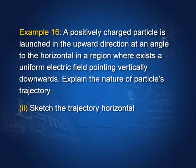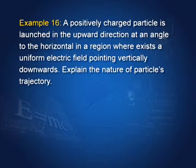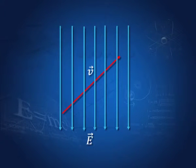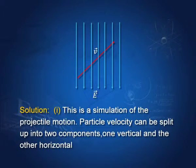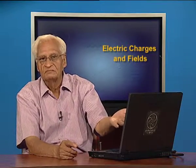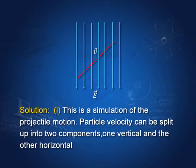A positively charged particle is launched upward at an angle to the horizontal in a uniform electric field. Resolving the initial velocity into components along and perpendicular to the field: perpendicular to the field there is no force, so that component produces uniform motion; along the field there is a force causing acceleration. This is analogous to projectile motion, and the path taken by the particle is that of a projectile.